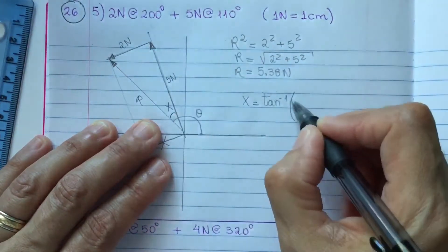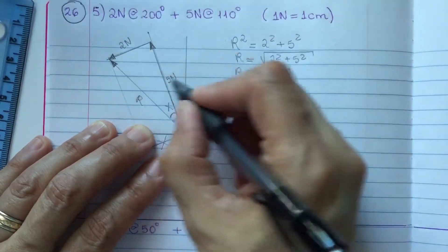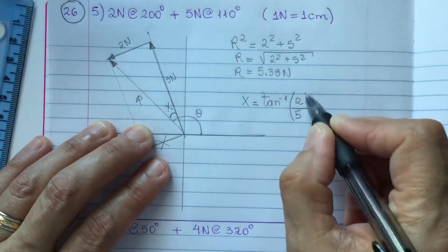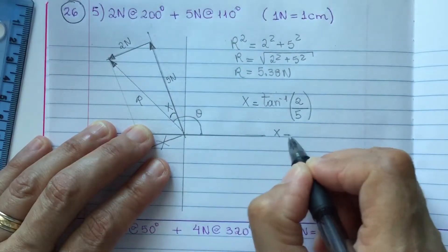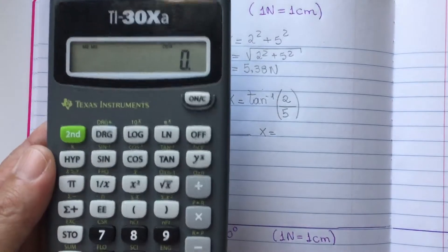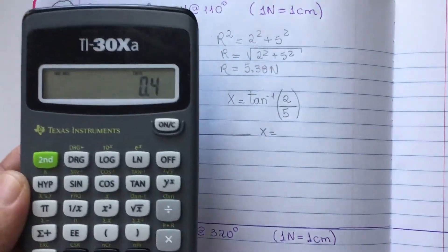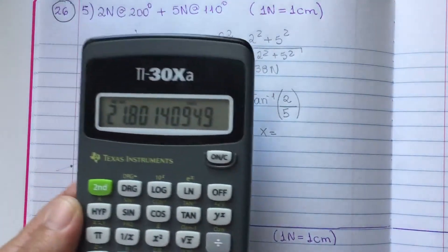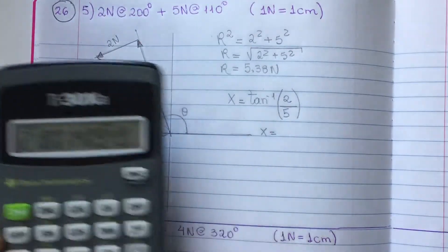The opposite is 2. Adjacent is 5. 2 divided by 5. Inverse of a tangent. 21.8 degrees.